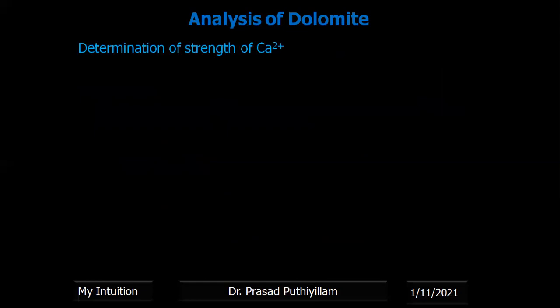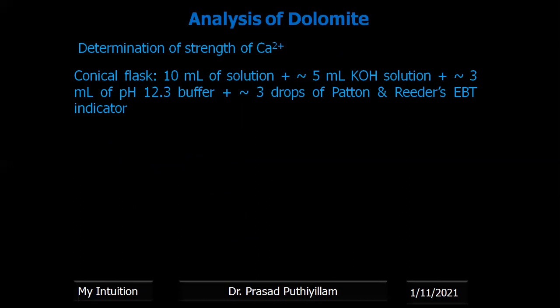Determining the strength of calcium alone: another 10 ml of solution is taken. Approximately 5 ml of KOH solution is added so magnesium precipitates as magnesium hydroxide, avoiding its interference. 3 ml of pH 12.3 buffer (diethylamine) is maintained so the magnesium hydroxide precipitate does not redissolve. Three drops of Patton-Reeder's indicator are added — note: no EBT here; that was a typing mistake in the notes. Only Patton-Reeder's indicator is added and titrated with standard disodium salt of EDTA. At pH 12.3, EBT does not work properly and cannot give identifiable color changes.